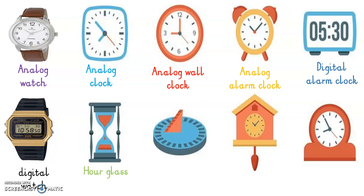This is an hourglass. An hourglass has sand in it and a very small middle. When you turn it upside down, all the sand is in the top and it runs slowly down the middle — it gives us an hour. So by the time the sand runs out, an hour has passed. This is a sundial — people used this many, many years ago. We have one in our school garden.